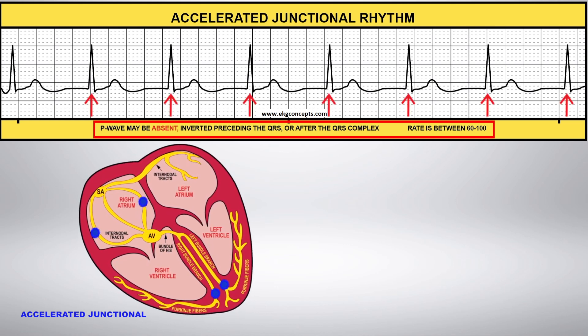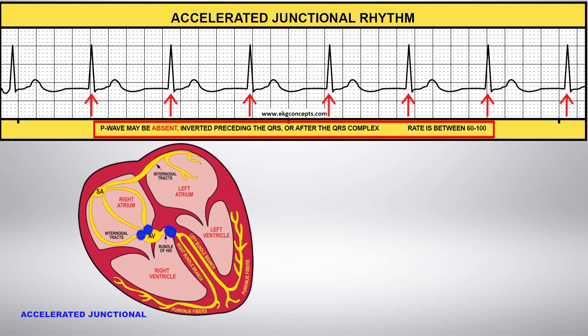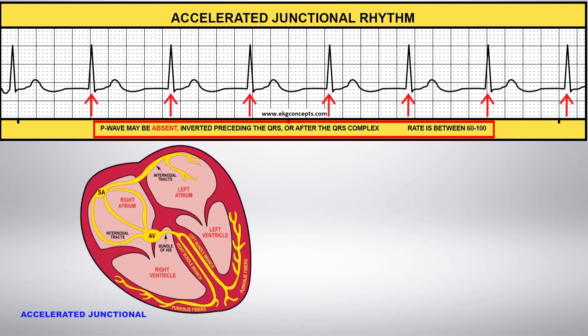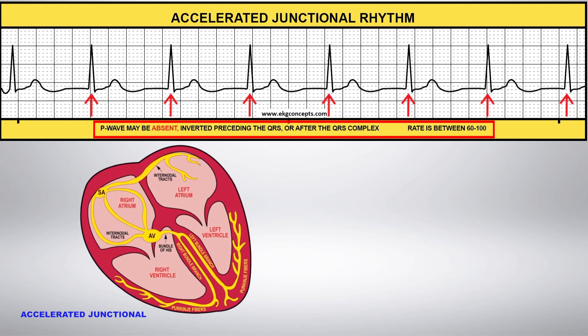As illustrated, the atria and ventricles depolarize simultaneously. This causes the P waves to be hidden within the QRS complex, as illustrated by the red arrows.